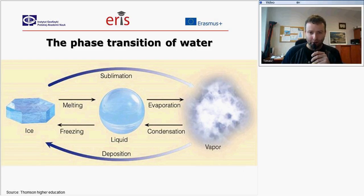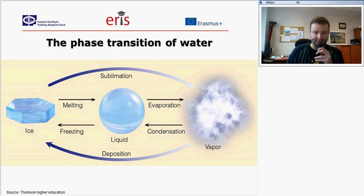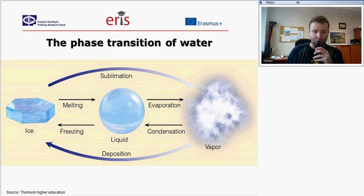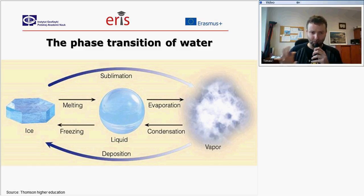Let's look at the phase transitions of water. In nature, water can be seen in different states: solid state as ice, liquid state as water, and also water vapor in the gas state. There is a transition between those states due to air temperature. These transitions are named on this chart. Between ice and liquid form there is melting and freezing. Between liquid and gas there is evaporation or condensation. The transition between solid and gas states is sublimation or deposition.